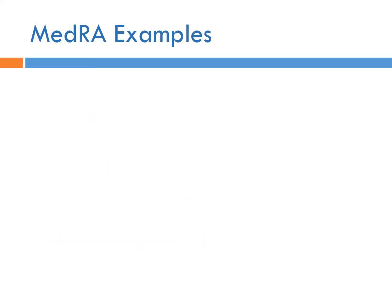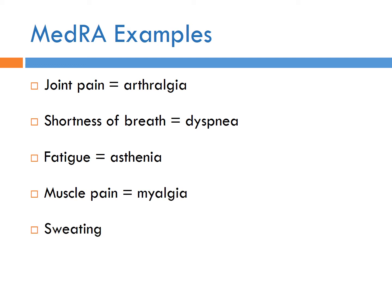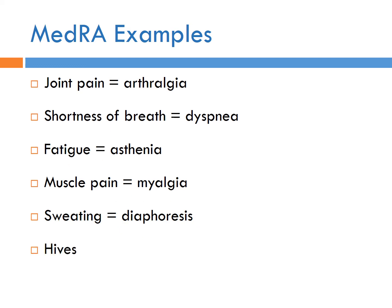MedDRA applies to all phases excluding preclinical — phase 0 through 4. Here are some examples: someone might say they have joint pain, but MedDRA wants you to say arthralgia. Shortness of breath becomes dyspnea. Fatigue is asthenia. Muscle pain becomes myalgia. Sweating becomes diaphoresis — it doesn't sound so bad when you say diaphoresis. Hives become urticaria. If you've taken a medical terminology class, you can understand why it's important. This is why the clinical research coordinator curriculum includes medical terminology.